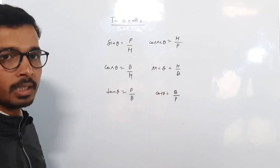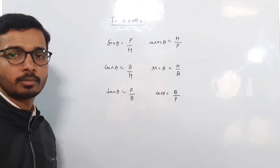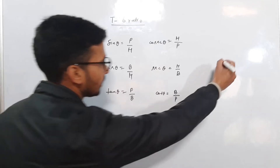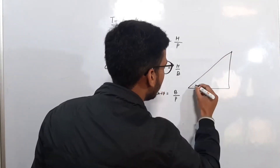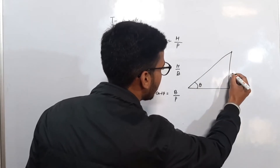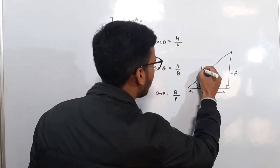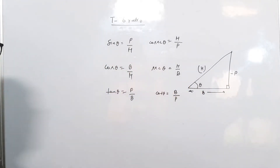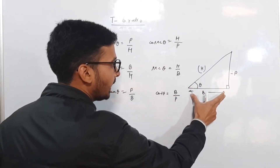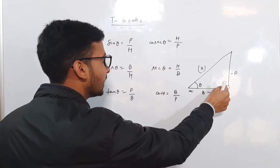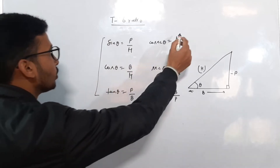So these are the trigonometric ratios we need to use in Height and Distance to solve questions. Now, this is a right-angle triangle. Theta is the angle, the side opposite to theta is the perpendicular, the horizontal line is the base, and the side opposite the 90-degree angle is the hypotenuse. We have to remember these because we will use them to solve problems.